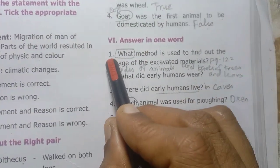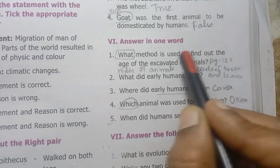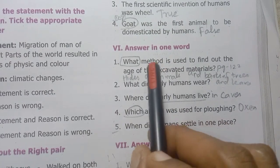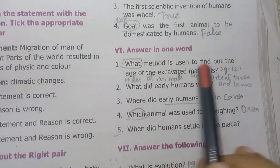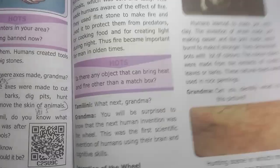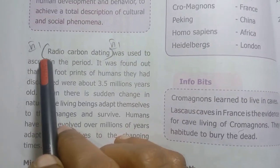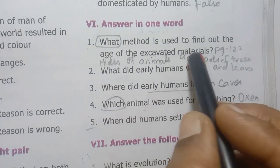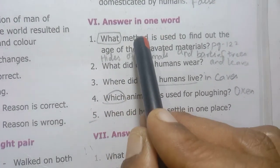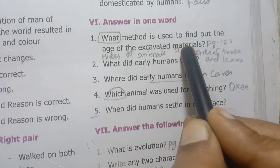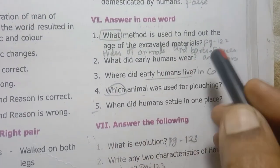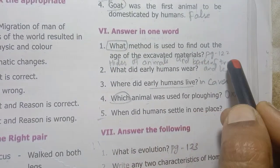Roman number 6: answer in one word. What method is used to find out the age of excavated materials? What did the early humans wear? They wore hides of animals and barks of trees and leaves.